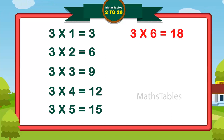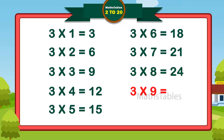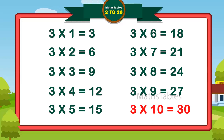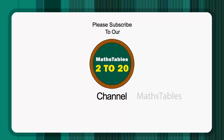Three sevens are twenty-one, three sevens are twenty-one. Three eights are twenty-four, three eights are twenty-four. Three nines are twenty-seven, three nines are twenty-seven. Three tens are thirty, three tens are thirty.